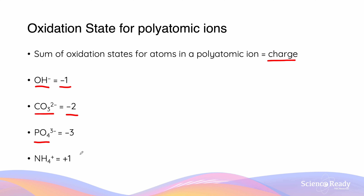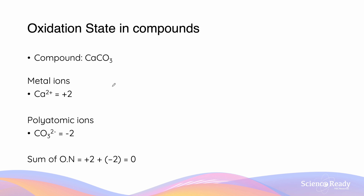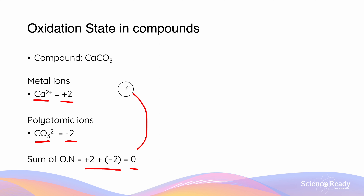Phosphate is 3−, with an oxidation state of −3, and ammonium has a charge of +1 and so it has an oxidation state of +1. In compounds, the oxidation states are going to add up to zero. Since calcium carbonate is made up of one calcium ion which has a charge of 2+, meaning an oxidation state of +2, and carbonate has a charge of 2−, meaning an oxidation state of −2, the sum of these two ions will add up to zero — which is the charge of the calcium carbonate compound.